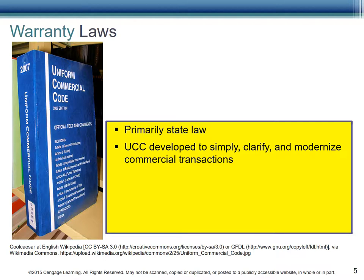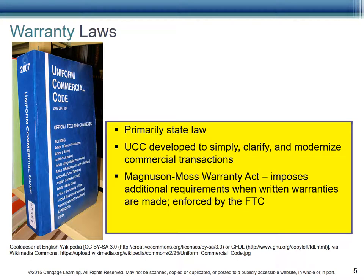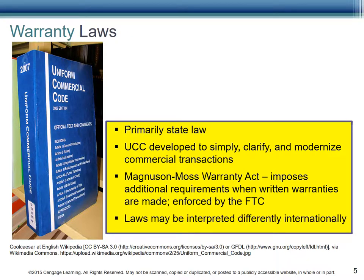The intent of the UCC was to simplify, clarify, and modernize commercial transactions. The Magnuson Moss Warranty Act added additional requirements when a written warranty is made. These rules are enforced at the federal level by the FTC. Internationally, laws vary tremendously, although most countries have contract laws similar to the U.S. Enforcement and awards vary as well. Consult a lawyer for more information.